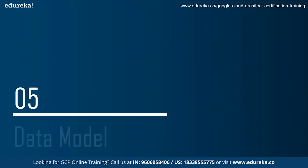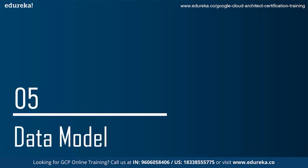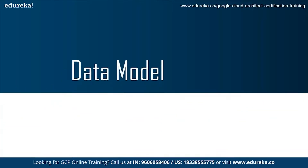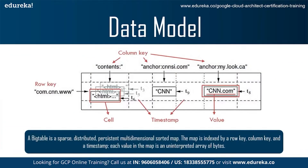Let's now have a look at the data model of Google Bigtable. A Bigtable is a sparse, distributed, persistent, multi-dimensional sorted map. The map is indexed by a row key, column key, and a timestamp. Each value in the map is an uninterpreted array of bytes. This data model was settled on after examining a variety of potential uses of a Bigtable-like system.